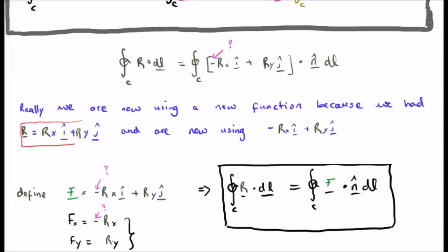We initially started out with r equals r sub x i-hat plus r sub y j-hat, but now we are using one which is minus r sub x i-hat plus r sub y j-hat. So it's a different function, let's give it a new name, we're going to call this f.